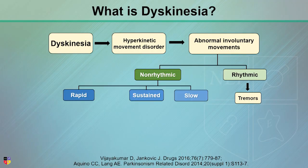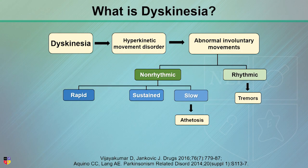If you look at nonrhythmic, we divide it into sustained, slow, or rapid. A sustained nonrhythmic movement is somebody doing this — you can see the dystonic posturing of the neck or arm. That's sustained, and sustained movements are dystonia. Somebody who's slow has more movement — it would be somebody trying to pick up a pencil or a glass and it's wormy, twisting movements, which is athetosis.